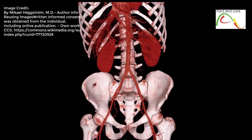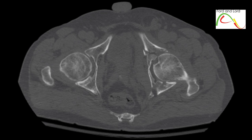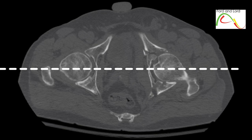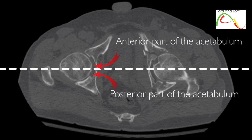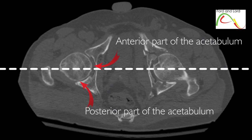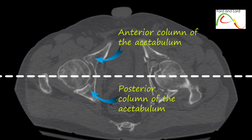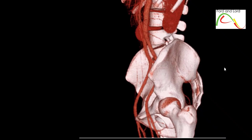But first, we need to discuss the terms anterior column and posterior column of the acetabulum. Let's draw a horizontal line through the middle of this axial CT image. The structures above the line are anterior to the structures below. This part of the acetabulum is anterior and this is posterior. This is the anterior column and this is the posterior column of the acetabulum.